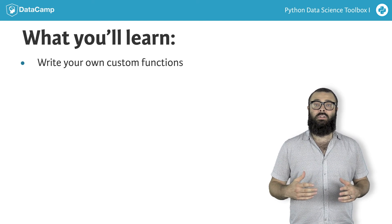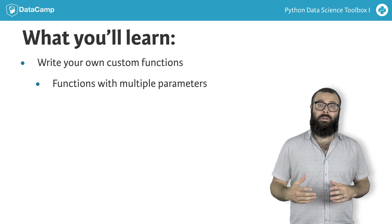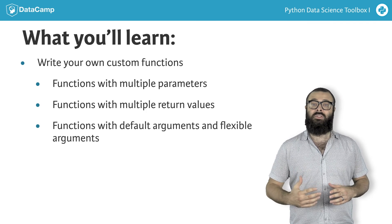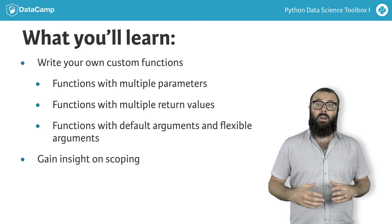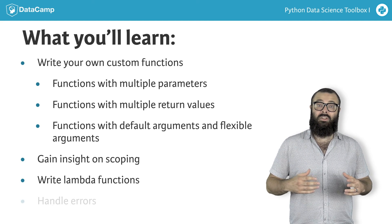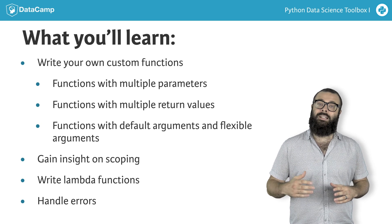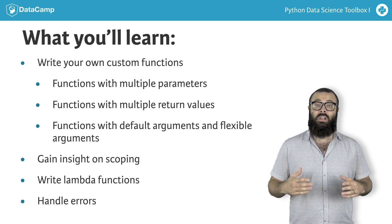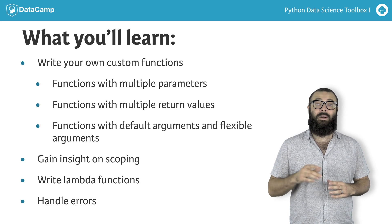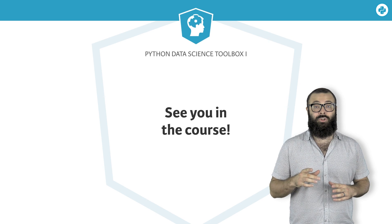You'll come out of this course being able to write your very own custom functions, complete with multiple parameters and multiple return values, along with default arguments and flexible arguments. You'll have gained insight into scoping in Python, and be able to write Lambda functions and handle errors in your very own function writing practice. On top of this, you'll wrap up each chapter by diving into using your acquired skills to write functions that analyze Twitter dataframes and are generalizable to broader data science contexts. Take the course instead — I'll see you shortly in chapter one.